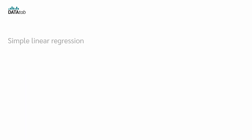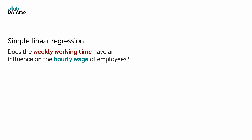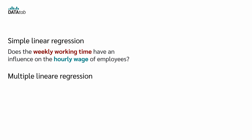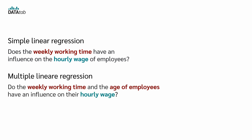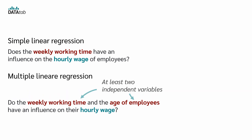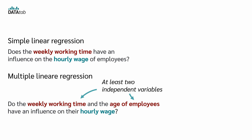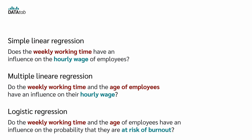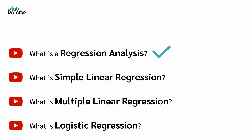A quick recap. In simple linear regression, a question could be: does the weekly working time have an impact on the hourly wage of employees? Here we only have one independent variable. In multiple linear regression: do the weekly working hours and the age of employees have an influence on the hourly wage? Here we have at least two independent variables — in this case weekly working hours and age. And for logistic regression: do the weekly working hours and the age of employees have an influence on the probability that they are at risk of burnout — where burnout risk has the categories yes or no? Now we have a good understanding of what regression analysis is. In the next video we'll dive into linear regression. See you there in just a moment.